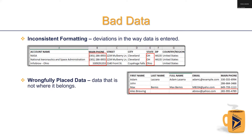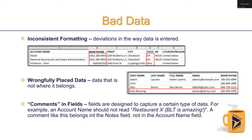Wrongfully placed data is data that's not where it belongs. In the example image, we can see that with Ailes Brewing — looking at the column headers and row data — these records are contacts in the contact table, but Ailes Brewing is a place of business and belongs in the account table. Next, we have comments in fields. Fields are designed to capture a certain type of data. For example, an account name should not read 'Restaurant X — oh, the BLT is amazing.' A comment like that belongs in notes, not the account name.